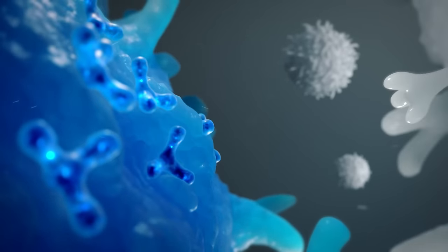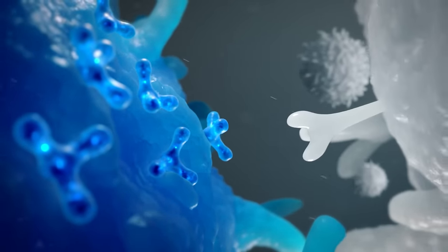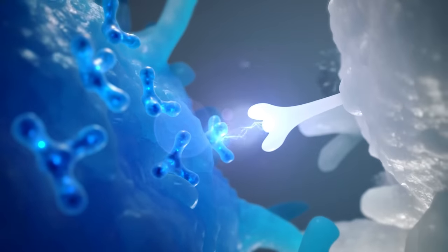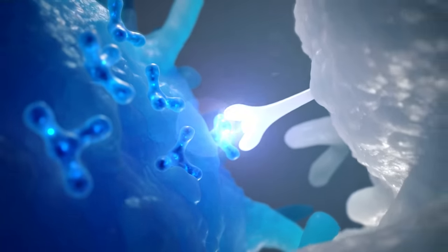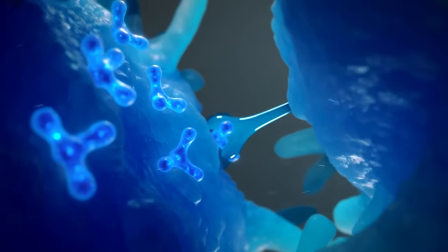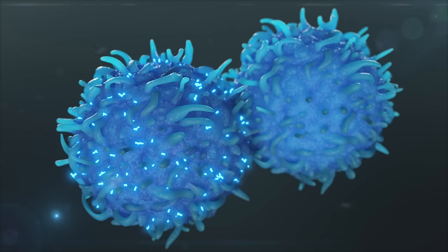From there, the newly educated cell creates more transfer factors to place on its surface. As educated immune cells come into contact with uneducated immune cells, they pass their immune system knowledge to those cells.